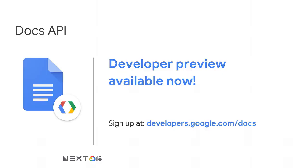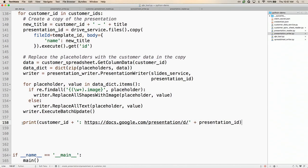As we saw, we used the Sheets and Slides APIs to automate a particular business process. But I'm sure you're wondering — what about a Docs API? Today, we're announcing a developer preview of the Docs API. This is a REST API that works similarly to the Sheets and Slides APIs. I'm going to do a quick demo of how we can use the Docs REST API to generate the same invoice that Maurice showed earlier. Switch back to the demo.